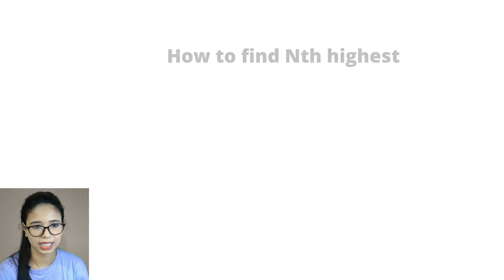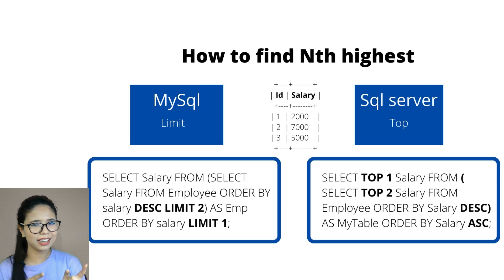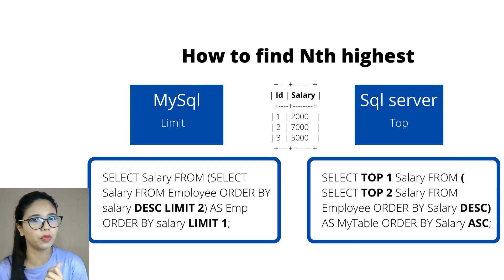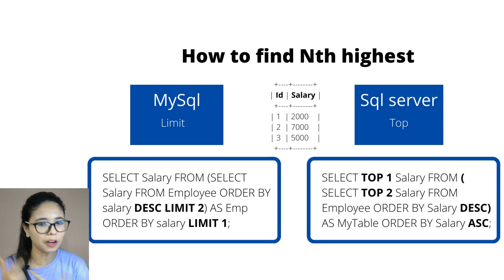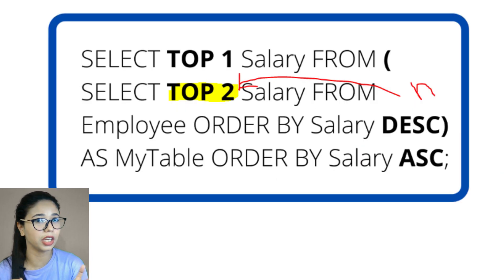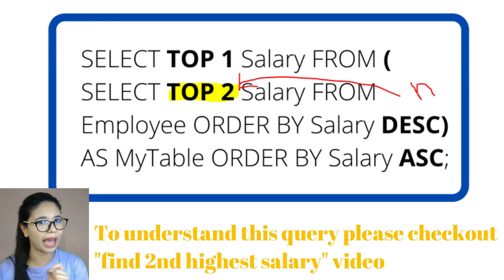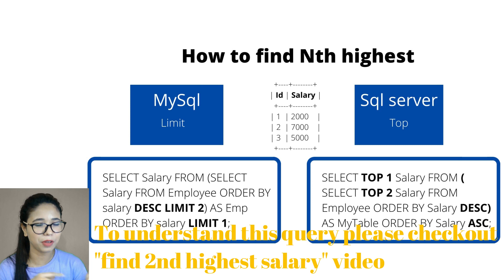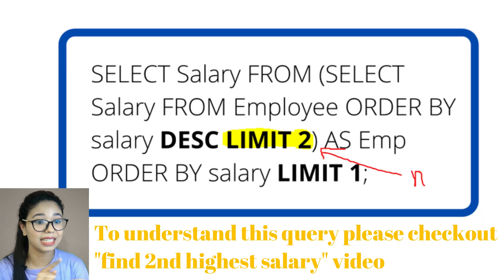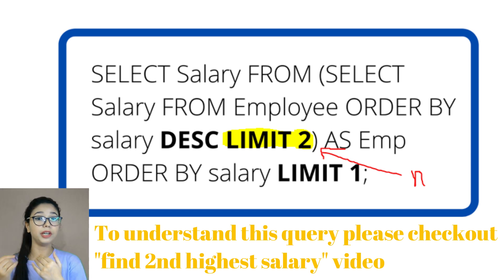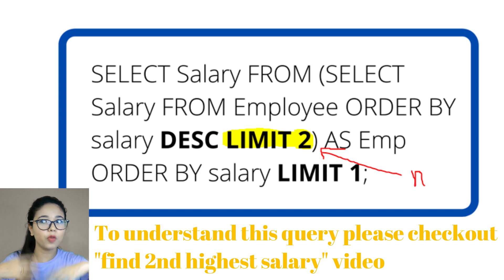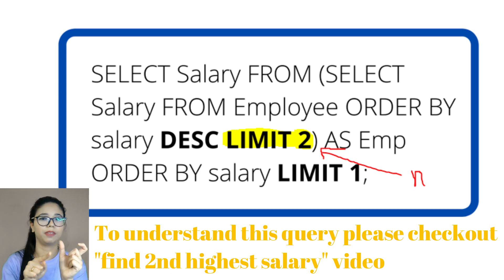This slide is from my previous lecture. In MySQL, you can see the LIMIT clause — for the Nth highest salary, in the subquery you need to make the number equal to N. For example: SELECT salary FROM employee ORDER BY salary DESC LIMIT 2 gives the top two salaries. If you want the fifth highest salary, replace LIMIT 2 with LIMIT 5; for the fourth highest, use LIMIT 4.